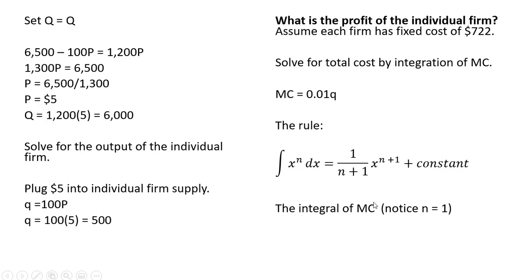So applying that integral rule to our marginal cost equation where n, in our case, that's just q raised to the power of n, so n in our case is just 1. So we get 1 divided by 1 plus 1. And then on the exponent here on the q term, it's n plus 1, where again, n is 1, plus the constant.